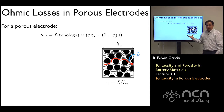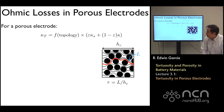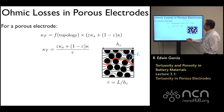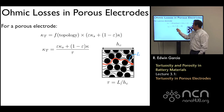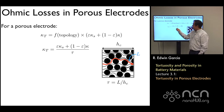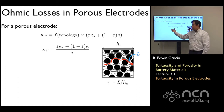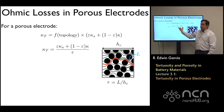If we write the tortuosity in that form, then we can specify a much more concrete form for that topological measure — we call it tortuosity — and it's really a combination of the conductivity or diffusivity of the electrolyte and the conductivity of the particles.